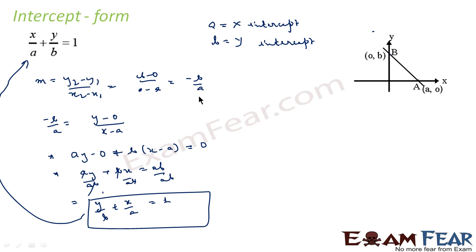Please make a note: this kind of equation is easy and handy for forming the equation of a line when we know the x and y intercepts. If we know x and y intercepts, we can directly write the equation as x/a + y/b = 1, where a and b are the x and y intercepts respectively.